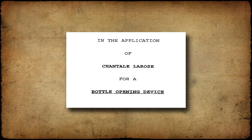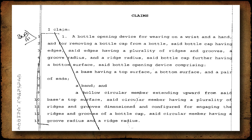The inventor first filed for the patent on February 18, 1999. When a patent is filed, the inventor is required to submit a claim, except for provisional patents, which are a special case. That claim is then examined by the USPTO.